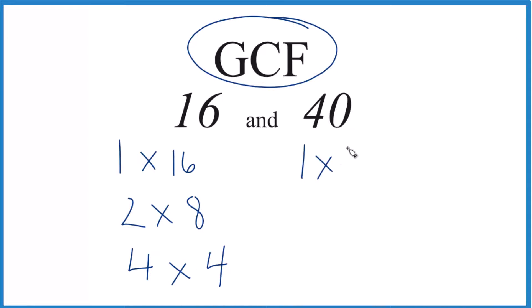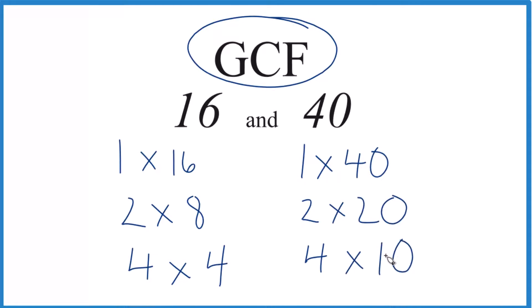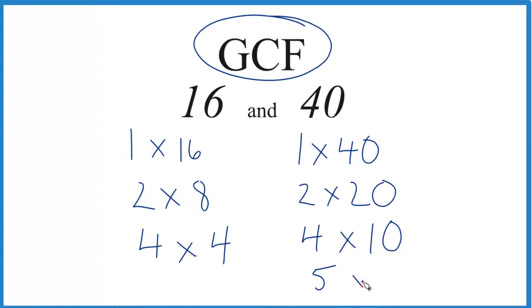For 40, we have 1 times 40, 2 times 20, 4 times 10, and 5 times 8, that equals 40. So these are our factors for 40.